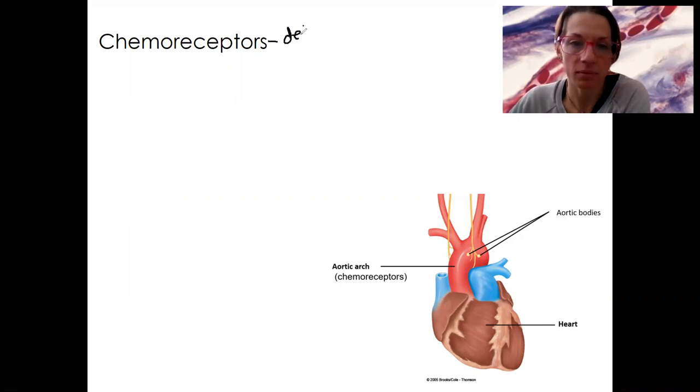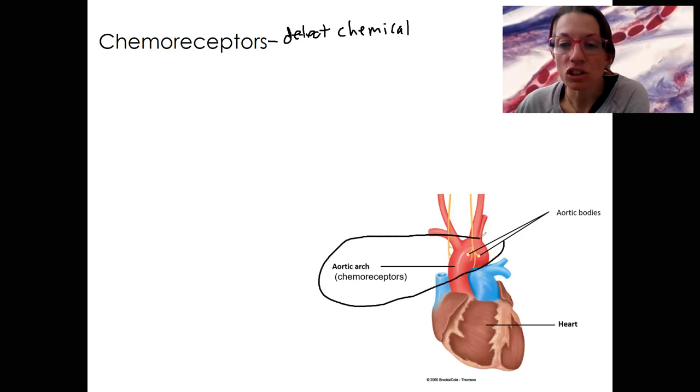Chemoreceptors detect chemicals, and in this case it's going to be chemicals related to respiration and cellular respiration and metabolic processes. They're located in the aortic arch, just like baroreceptors are, and this is a good place to be able to detect oxygen levels, carbon dioxide, and pH.